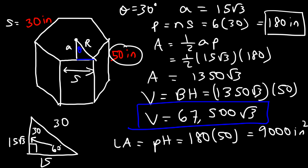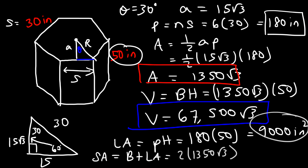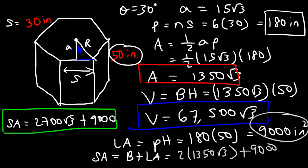Now let's calculate the total surface area: that's the area of the base plus the lateral area. We need to multiply the base area by 2 because we have the top and the bottom. So this is 2 times 1350 square root 3, plus the lateral area of 9,000. The final answer for the surface area is 2,700 square root 3 plus 9,000 square inches.